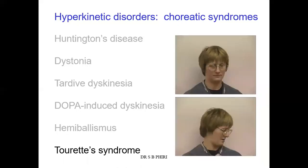Tourette syndrome begins in childhood or adolescence. It is a neurological disorder that involves repetitive movements or unwanted sounds — somebody may produce unwanted repetitive sounds like coughing or sneezing. This occurs because of destruction in certain neurons within the brainstem that results in these abnormal, repetitive movements.